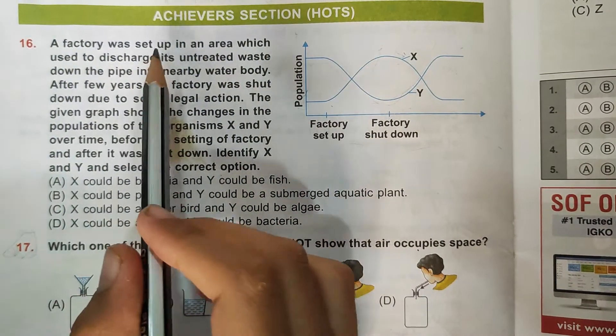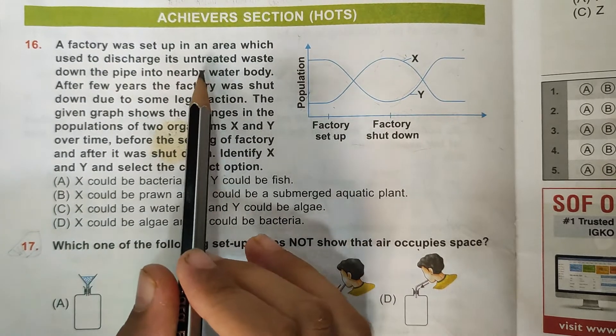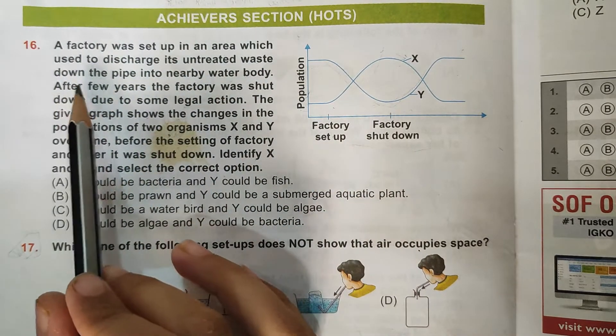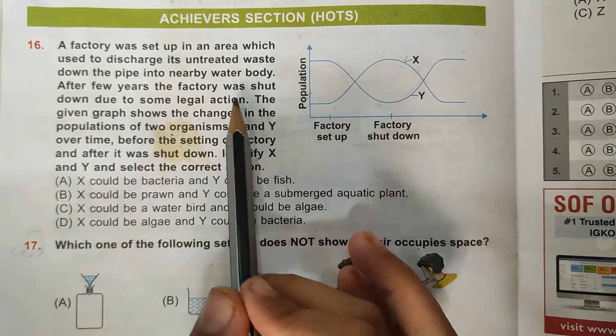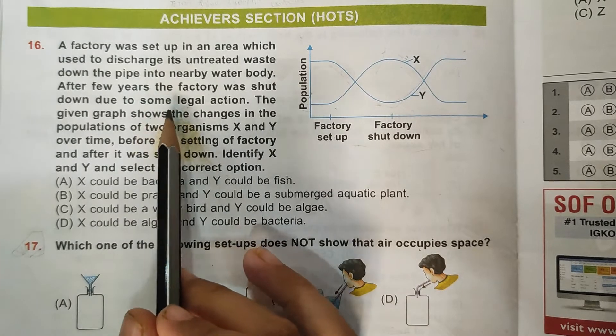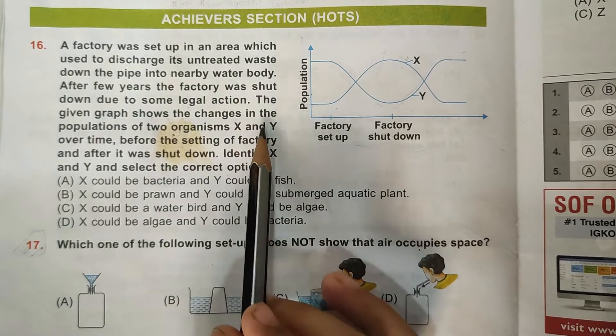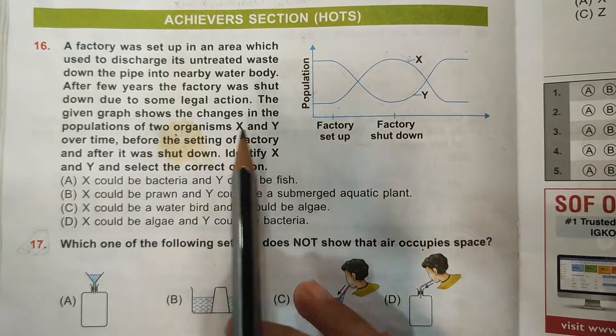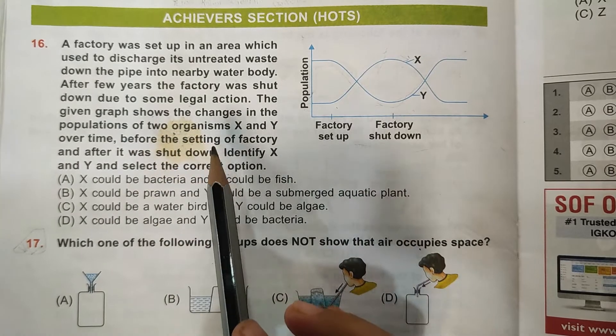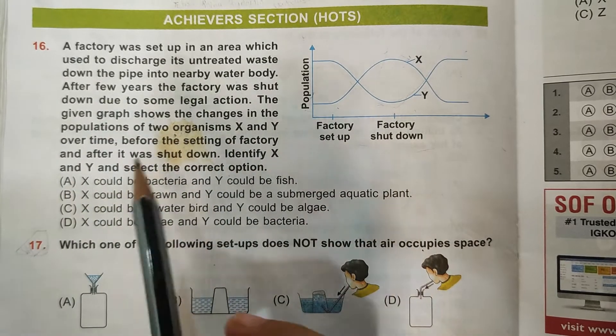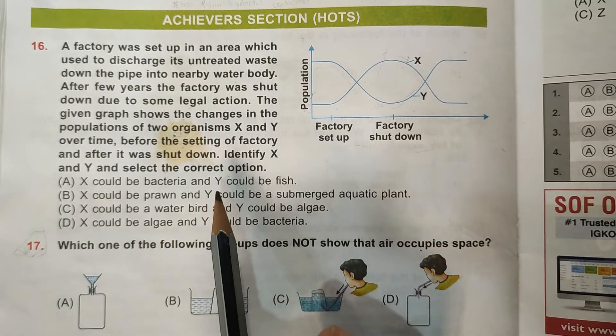16th question, Achiever section: A factory was set up in an area which used to discharge its untreated waste down the pipe into nearby water body. After few years, the factory was shut due to some legal action. The given graph shows the changes in the populations of organisms X and Y over time before the setting of factory and when it was shut down. Identify X and Y and select the correct option.